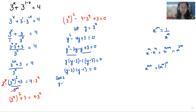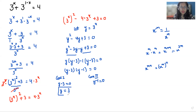We have two cases. Case 1: y minus 3 equals 0, so y equals 3. Case 2: y minus 1 equals 0, so y equals 1.